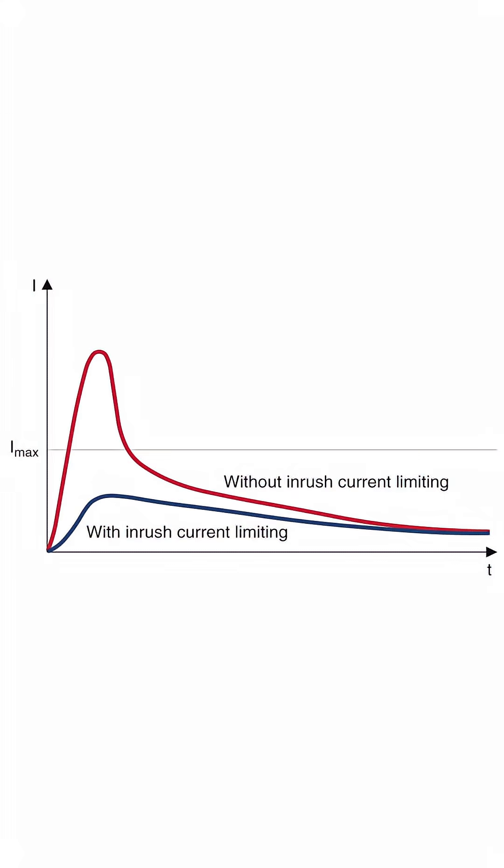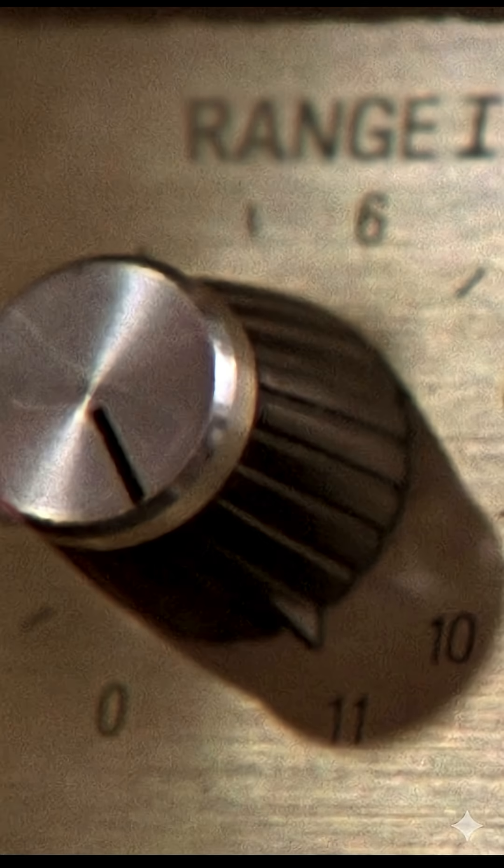When the motor starts, it draws the maximum current, sometimes dropping the voltage and crashing the Pico. We want to prevent this and have a dial to alter the range of the ball.